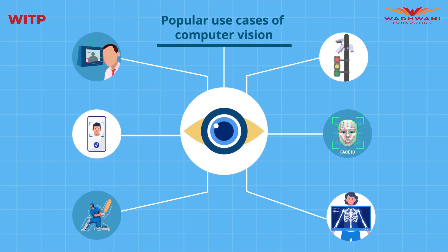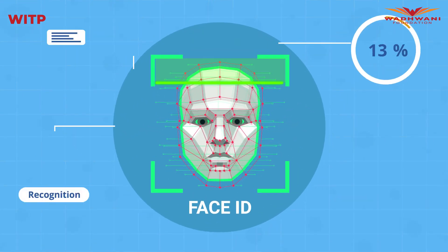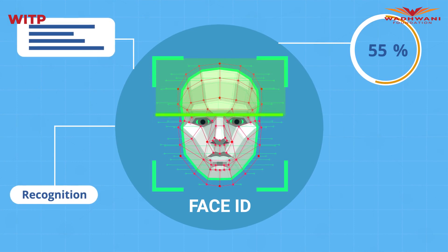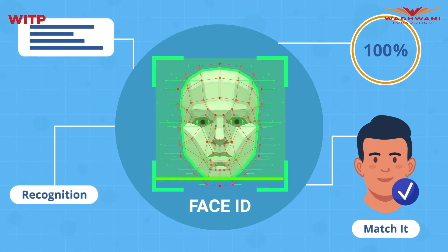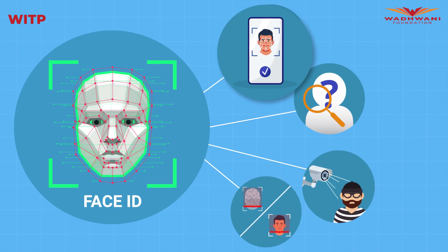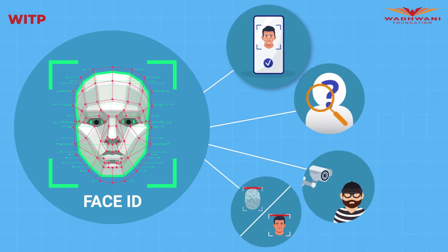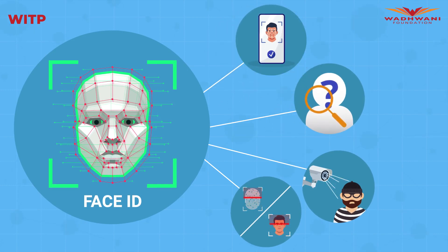Let's have a look at some popular use cases of computer vision. One of the most fascinating is face recognition. Thanks to face recognition, we can unlock our phone by pointing at it, but there are many other use cases as well.